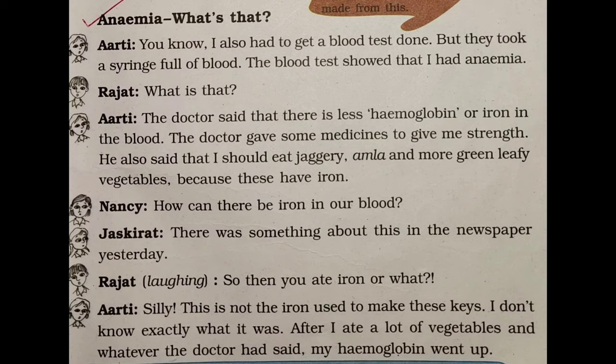Arti says: 'Actually, I don't know what kind of iron this is, but after I ate a lot of vegetables and whatever the doctor told me to eat, my hemoglobin went up.' After taking those food items, the rate of hemoglobin in her blood got more and more. That is the solution — this is how the hemoglobin rate was enriched in Arti's blood.